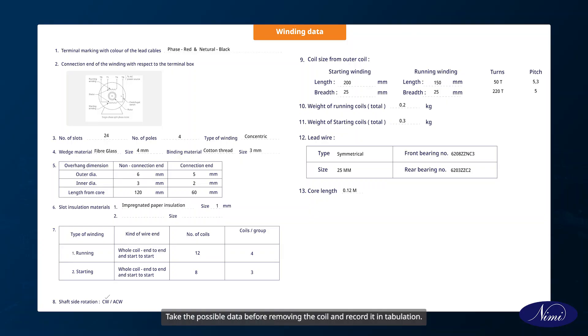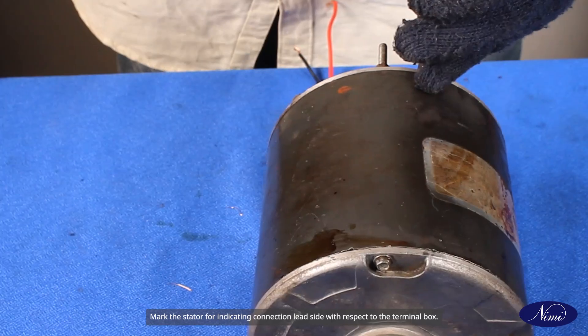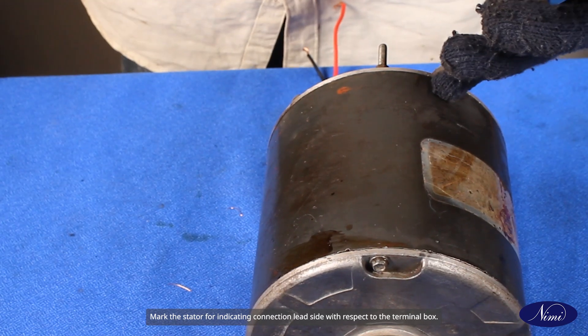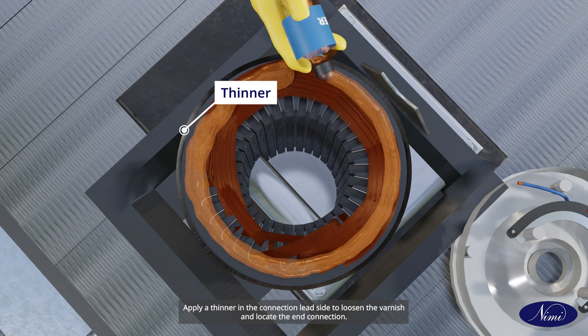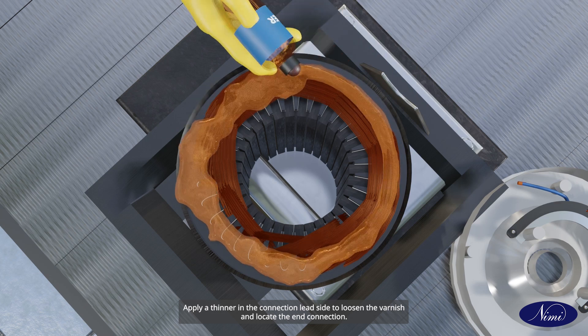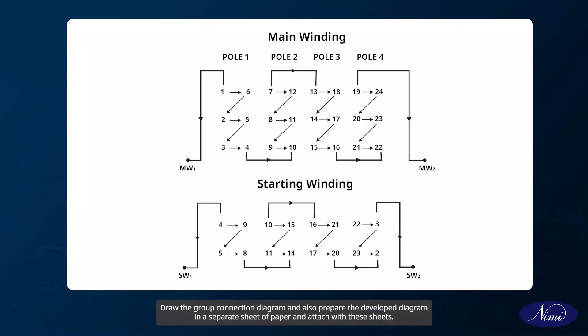Take the possible data before removing the coil and record it in tabulation. Mark the stator for indicating connection lead side with respect to the terminal box. Apply a thinner in the connection lead side to loosen the varnish and locate the end connection. Draw the group connection diagram and also prepare the developed diagram in a separate sheet of paper.